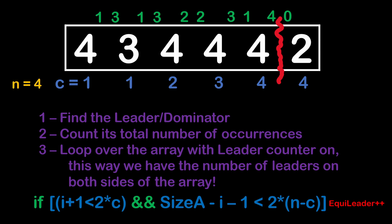If both conditions are true — a leader on the left and a leader on the right — we increment the equileader counter. An important remark: we always look for the dominator of the complete array. We don't consider any other number as a potential leader when cutting into slices, because since the dominator occurs in more than half of the array's elements, it is the only candidate to also be the dominator of smaller slices.